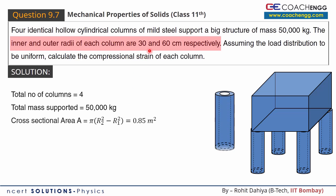The inner and outer radius of each column are 30 cm and 60 cm respectively — so the inner radius r1 is 30 cm and the outer radius r2 is 60 cm. The steel cross-sectional area is the outer area minus the inner area: area = π·r2² − π·r1². With r2 = 0.6 m and r1 = 0.3 m, the area works out to 0.85 m². I always prefer SI units in all my calculations.